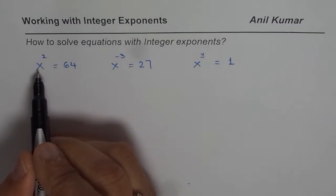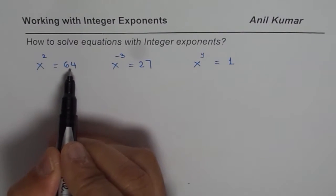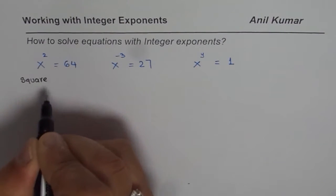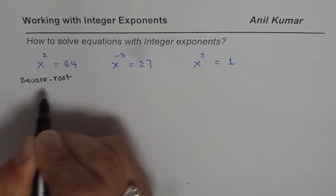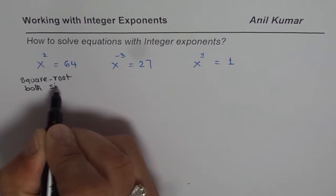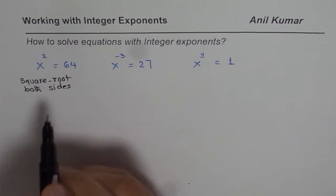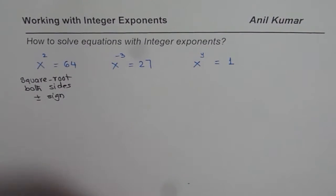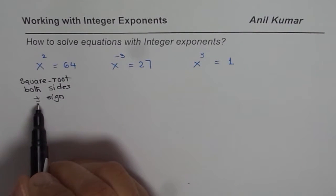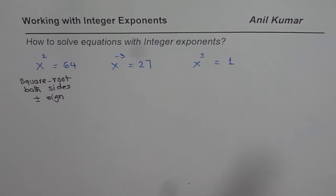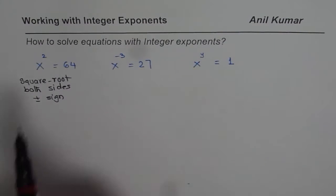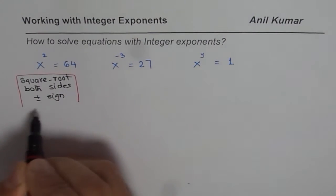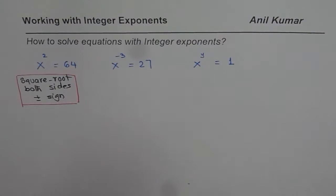For the first equation, whenever you have x squared and you are looking for some number, what should we do? We should square root both sides. The idea is to take the square root of both sides, and whenever you do that, incorporate the plus and minus sign. That is very important because the square of a negative number is also positive. So remember: square root both sides and incorporate the plus and minus sign.